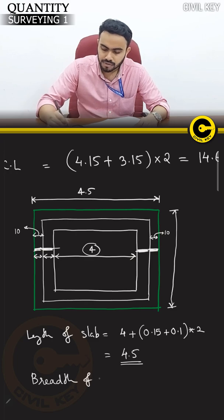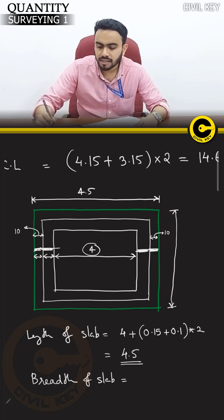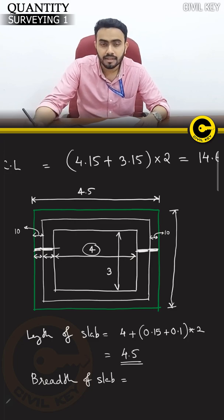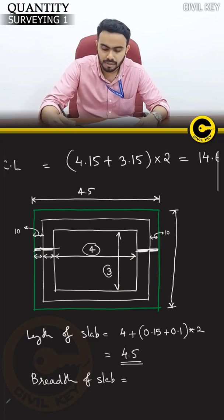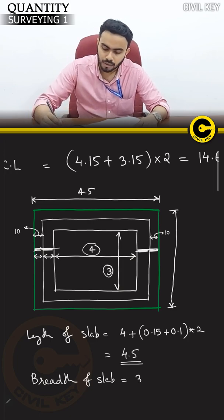Breadth of slab. The breadth of slab uses the inside dimension of 3m. Similarly, 3 + 0.15 + 0.15 + 0.1 + 0.1 = 3.5m. Breadth of slab is 3.5m.